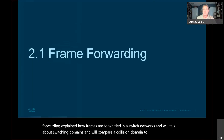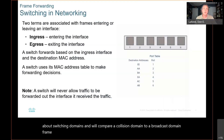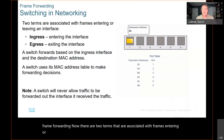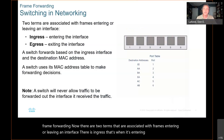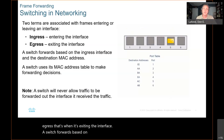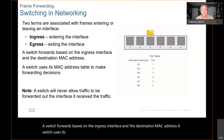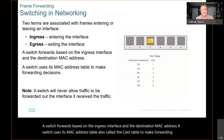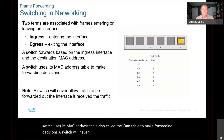Frame forwarding. There are two terms associated with frames entering or leaving an interface. There is ingress — that's when a frame is entering the interface — and egress, that's when it's exiting the interface. A switch forwards based on the ingress interface and the destination MAC address. A switch uses its MAC address table, also called a CAM table, to make forwarding decisions. A switch will never allow traffic to be forwarded out the interface that it received the traffic on.